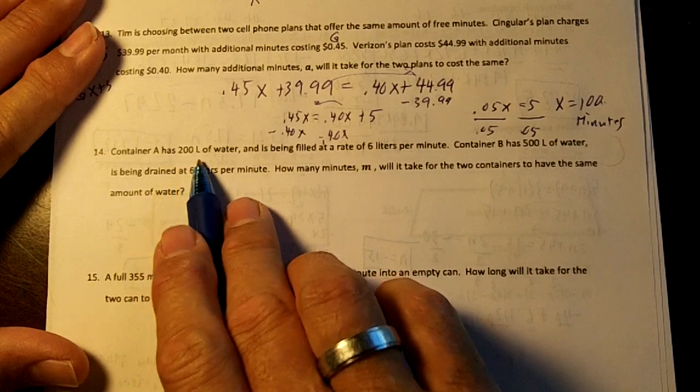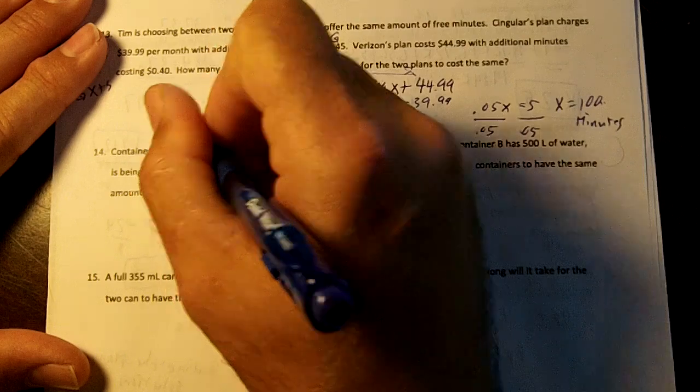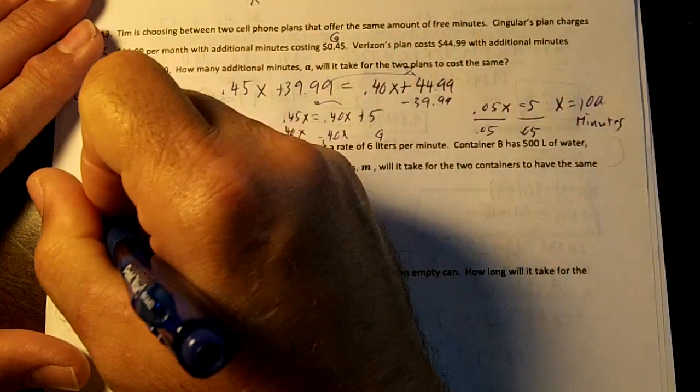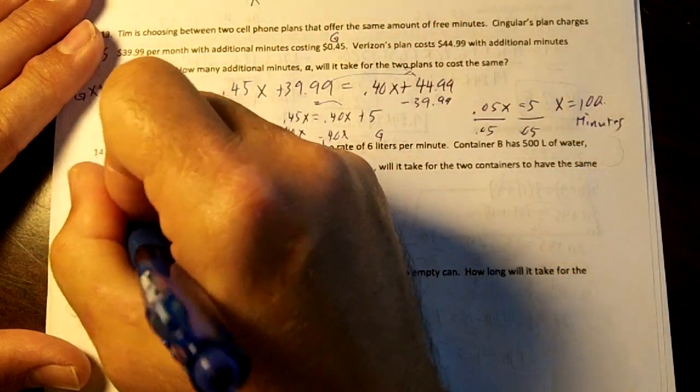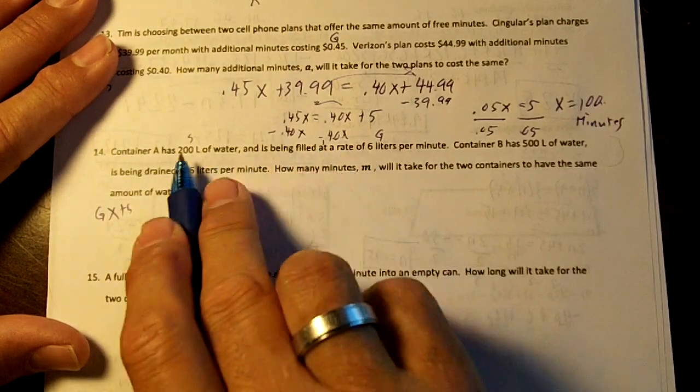Container A has 200 liters of water and is being filled at a rate of 6 liters per minute. This is our starting number. This is our growing number. We're going to use GX plus S. So we're going to have 6X plus 200.